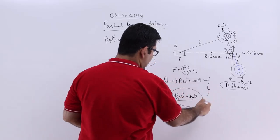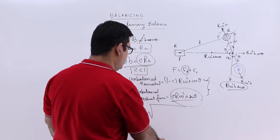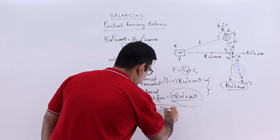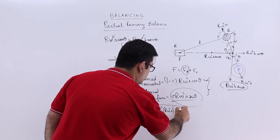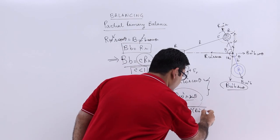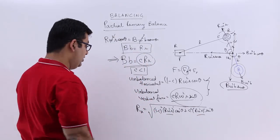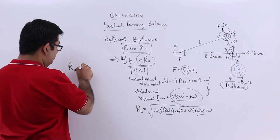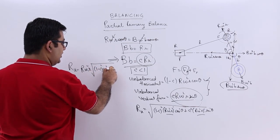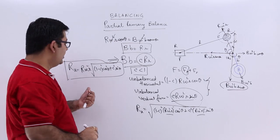The resultant unbalanced force would be F_u. This would be under root of these two forces. So you will have 1 minus c whole square R omega square small r whole square, and then you will have cos square theta plus c square R omega square small r whole square and then sin square theta. So from this I can take out that part common. So when you take that part common, you will get F_u equals capital R omega square into r into square root of 1 minus c whole square cos square theta plus c square sin square theta. This is the unbalanced resultant force.